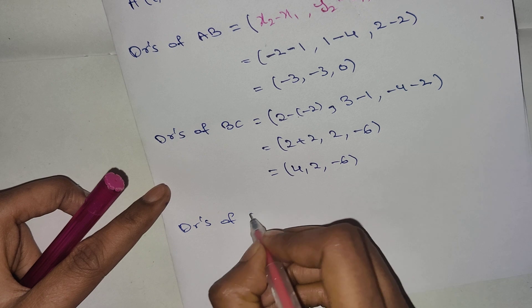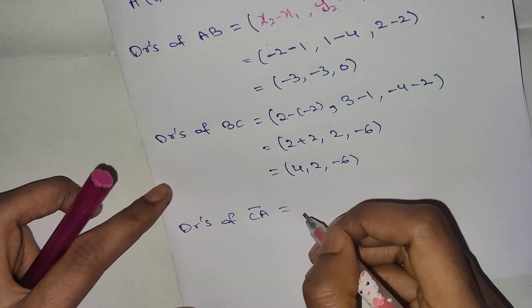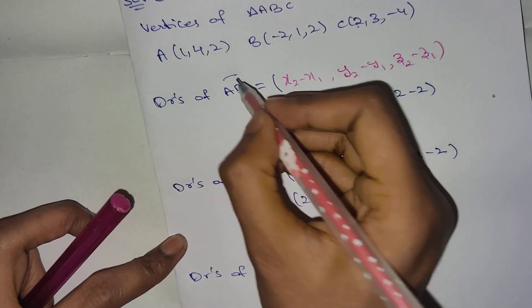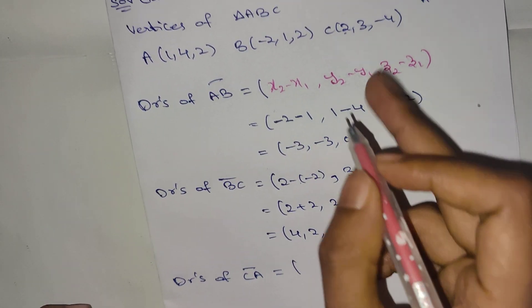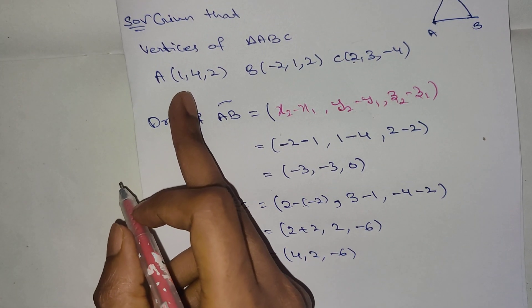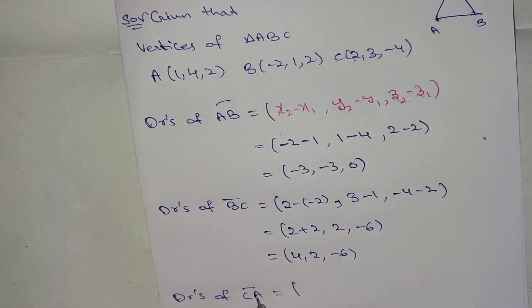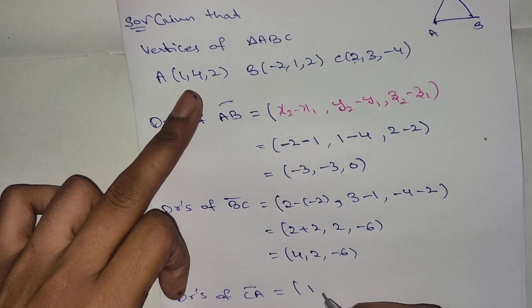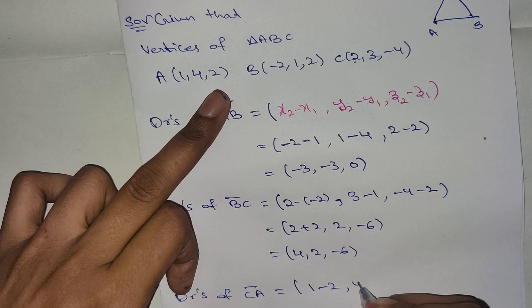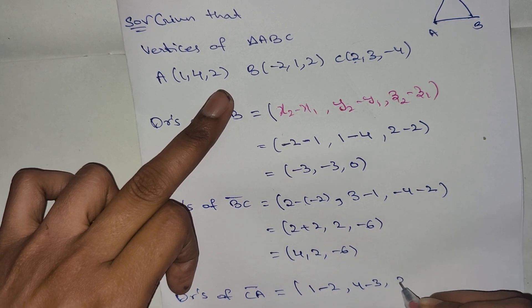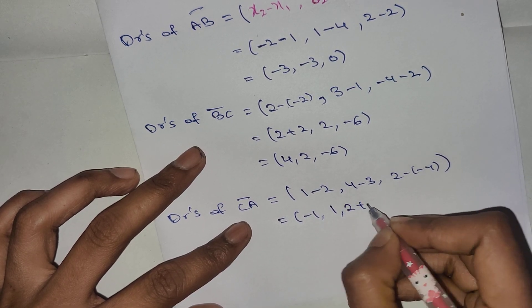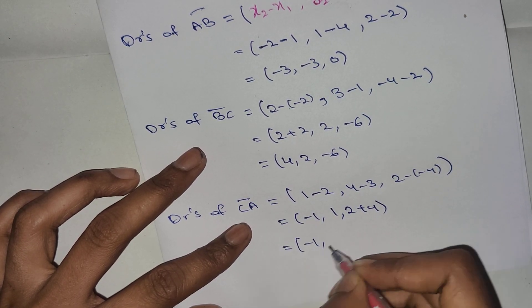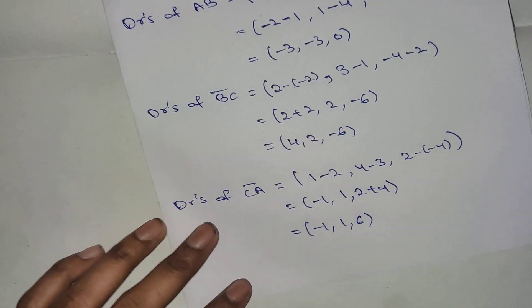DRs of CA: C point to A point. Using the formula x2, y2 — we get 1 minus 2, 4 minus 3, 2 minus of minus 4, giving minus 1, 1, 6.